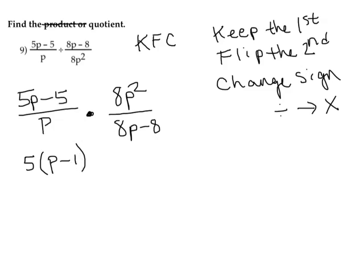Then the denominator, there's really nothing to factor there so that's going to stay the same. And then of course times, and then in the top, not really much to factor there either, but what I will do is write 8 times p times p, since that is p².